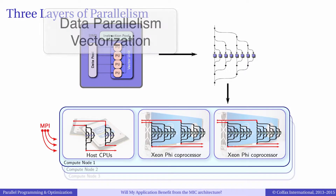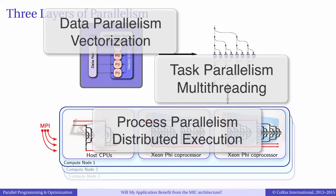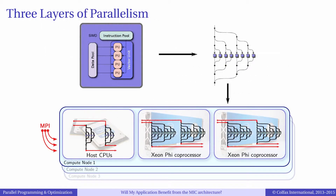The three layers are: data parallelism, which refers to the vectorization inside of every core; task parallelism, which refers to using multiple cores in a coprocessor; and process parallelism, which refers to using multiple coprocessors or multiple compute nodes. In this video, we will only discuss the performance implications of each layer. Later in the course, we will have in-depth discussion and practical examples of parallelism optimization.